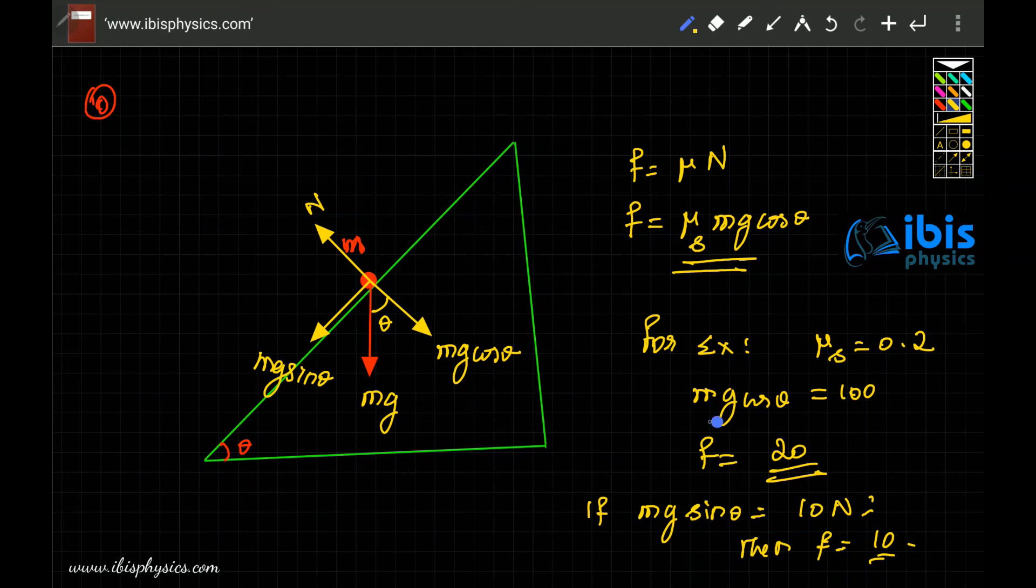As long as this mg sin theta is greater and the body begins to move down, then obviously if the body slides down, mg sin theta is greater than mu mg cos theta. Then in such case, the maximum possible frictional force experienced by the block on this surface is static friction into mg cos theta.